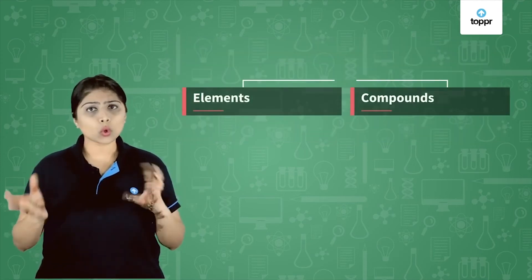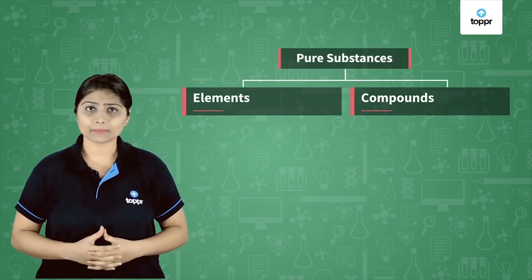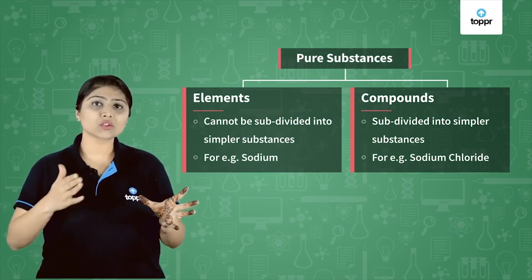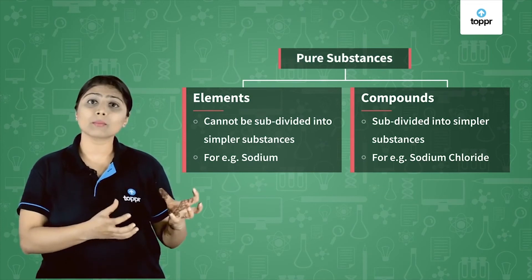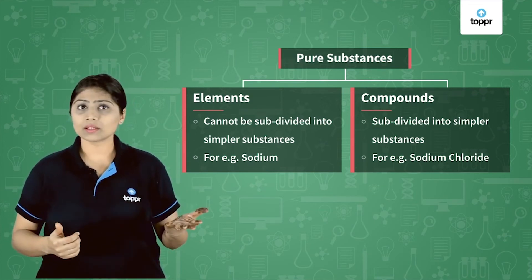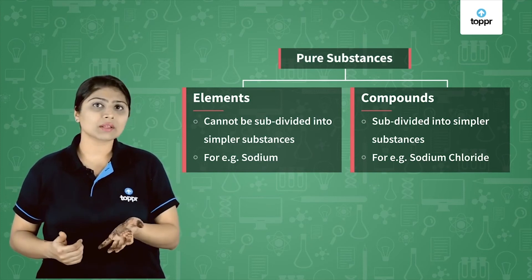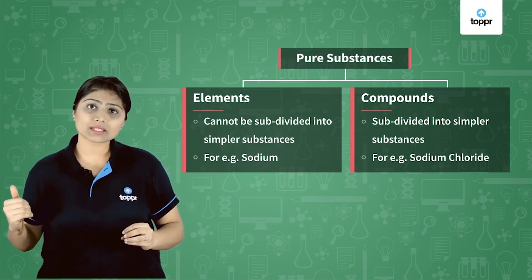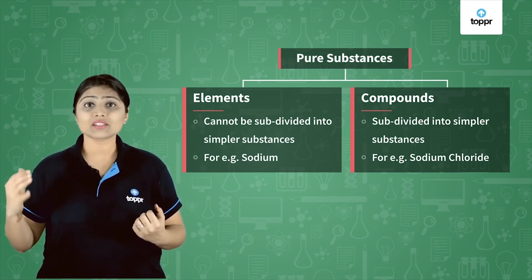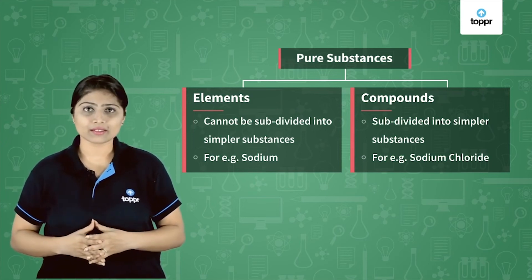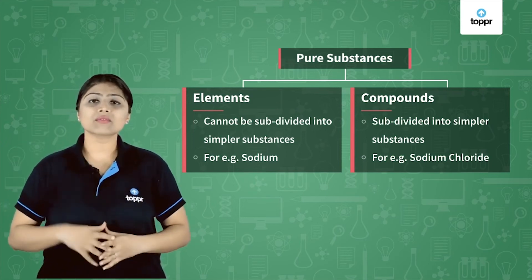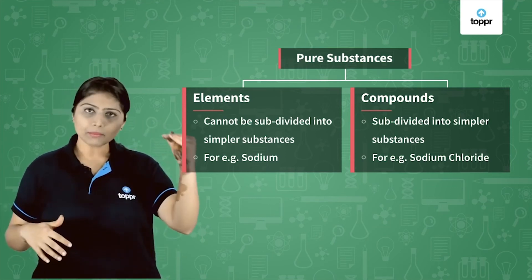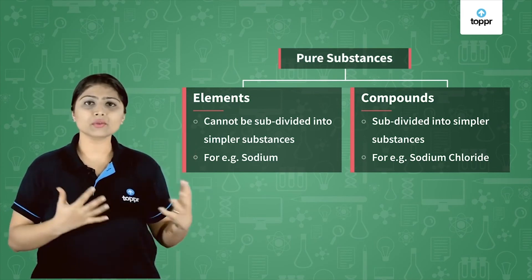Then if elements and compounds are both pure substances, what is the difference between them? The difference is that you can subdivide a compound into its constituent elements — that means into simpler substances. For example, sodium chloride can be subdivided into sodium and chlorine. But can you divide sodium alone into a simpler substance? No, because it is an element made up of just one kind of particle — it is the simplest substance. So an element cannot be subdivided into simpler substances, but a compound can.